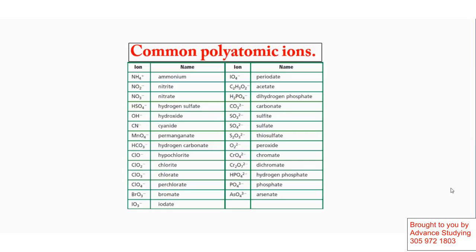Alright, today we'll look at polyatomic ions. Polyatomic ions are a combination of non-metals that work as a unit. We're going to see the difference between them.